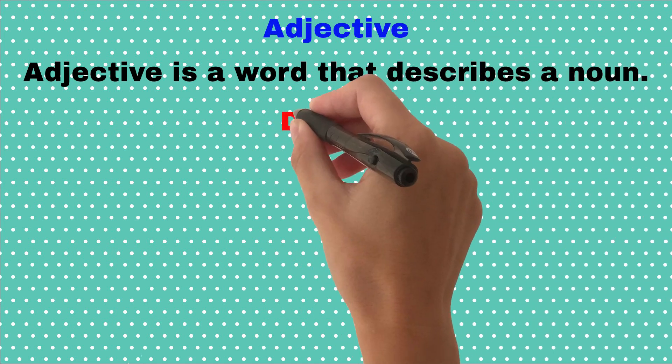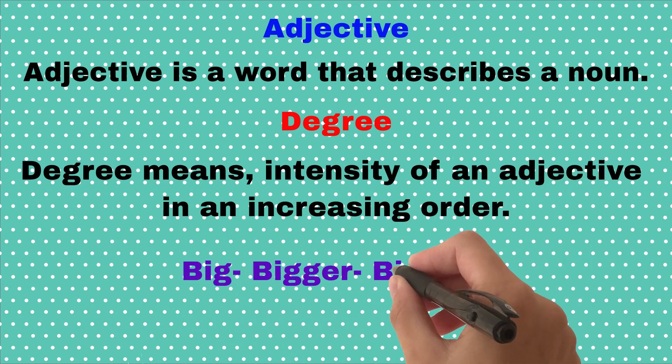Now, let's define what is a degree of an adjective. Degree means intensity of an adjective in an increasing order. For example, big, bigger, biggest.